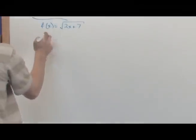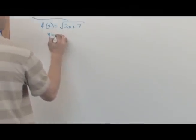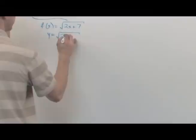So again, the first step, replace f(x) with y. y is equal to the square root of 2x plus 7.